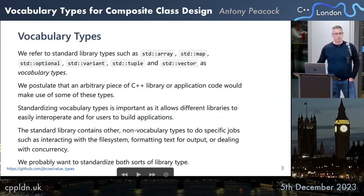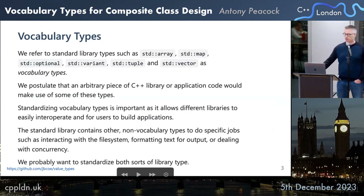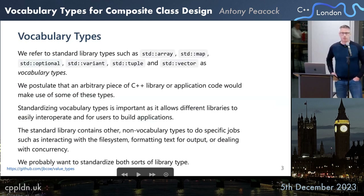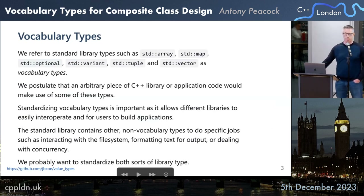We refer to standard library vocabulary types — such as std::array, std::map, std::optional, std::variant, std::tuple, std::vector — as vocabulary types. We postulate that an arbitrary piece of C++ code or application code would make use of some of these existing types. Standardizing vocabulary types is important as it allows different libraries to easily interop with users to build applications.